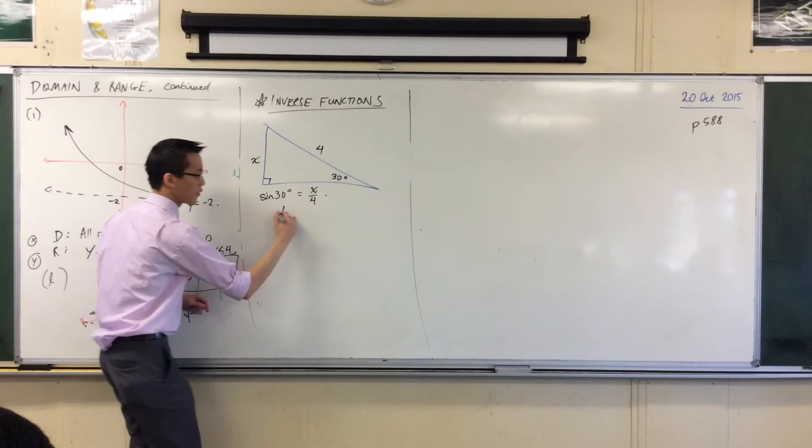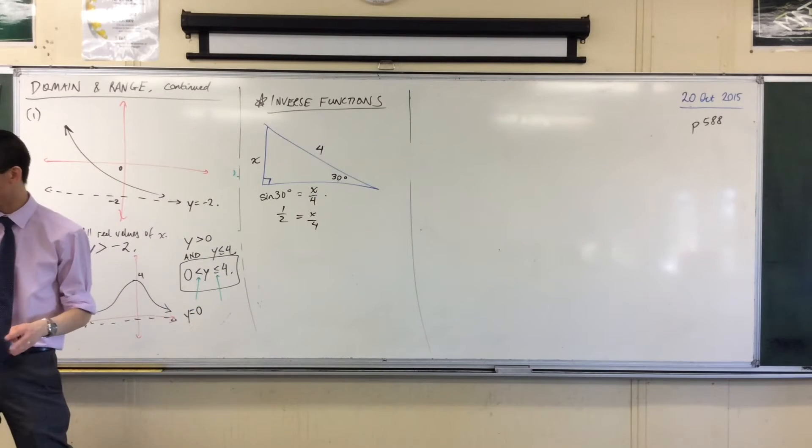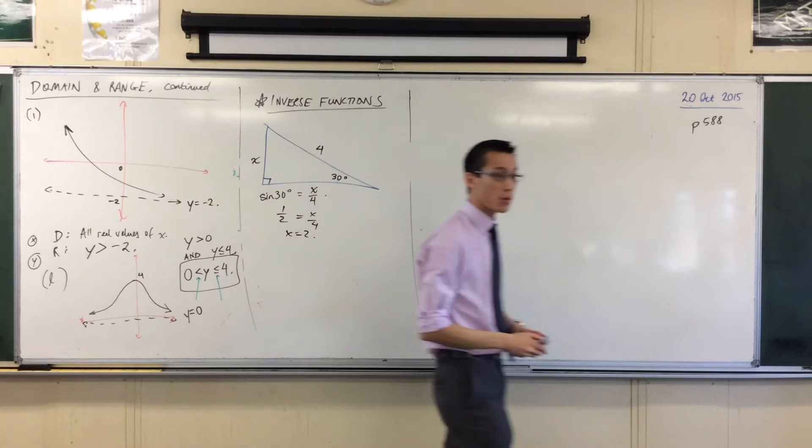Very good. So I've got a half equals x on 4, so far so good. I'll just multiply both sides by 4, and I get an answer. Okay, you're happy with that?